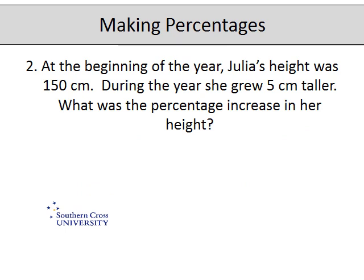The second question: at the beginning of the year Julia's height was 150 centimetres. During the year she grew 5 centimetres taller. What was the percentage increase in her height? The key word here is increase. The first step suggests that you write down the increase, which is 5.